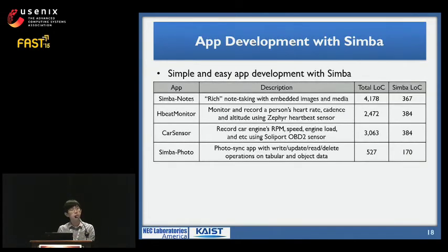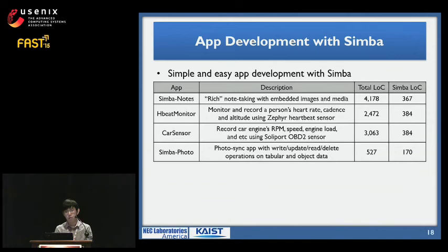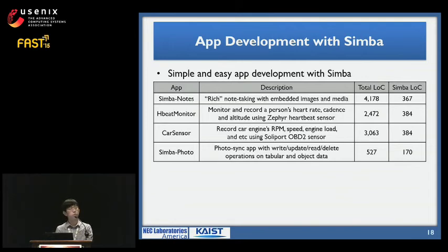We first look at how easy it is to develop an app with Simba. We implemented several apps: Simba Notes, an Evernote-like app with rich note-taking features; a Heartbeat Monitor app that records health conditions like heart rate and syncs to the cloud; a Car Sensor app that records car conditions like speed and RPM; and a Photo app with write, update, read, and delete of tabular and object data. As you can see from the table, it only required a few hundred lines of code — about 300 — to use Simba for data management and syncs, and real data management code was usually just tens of lines.